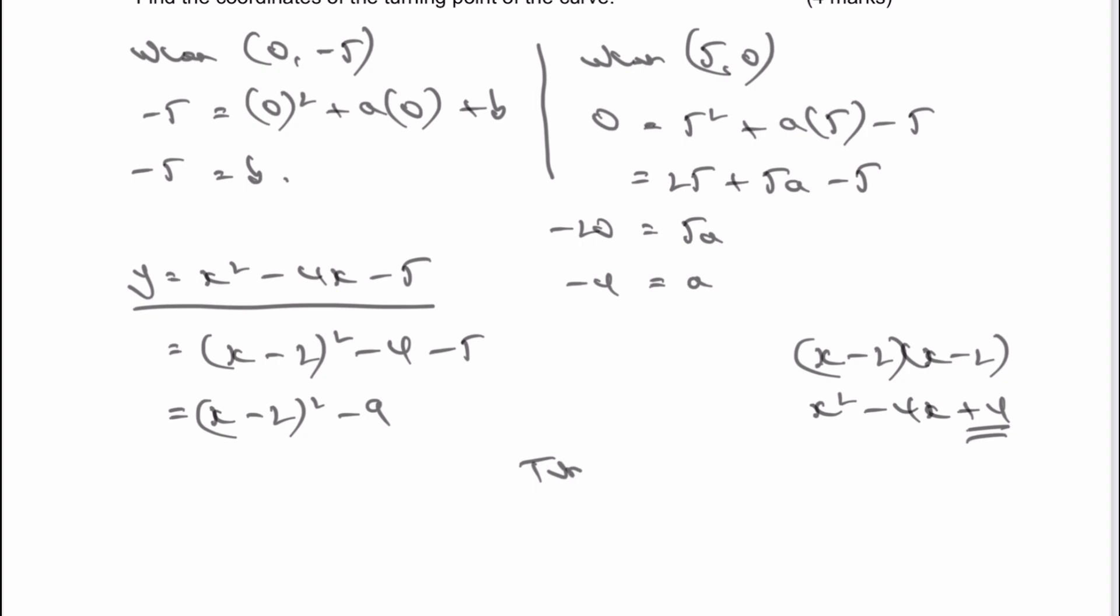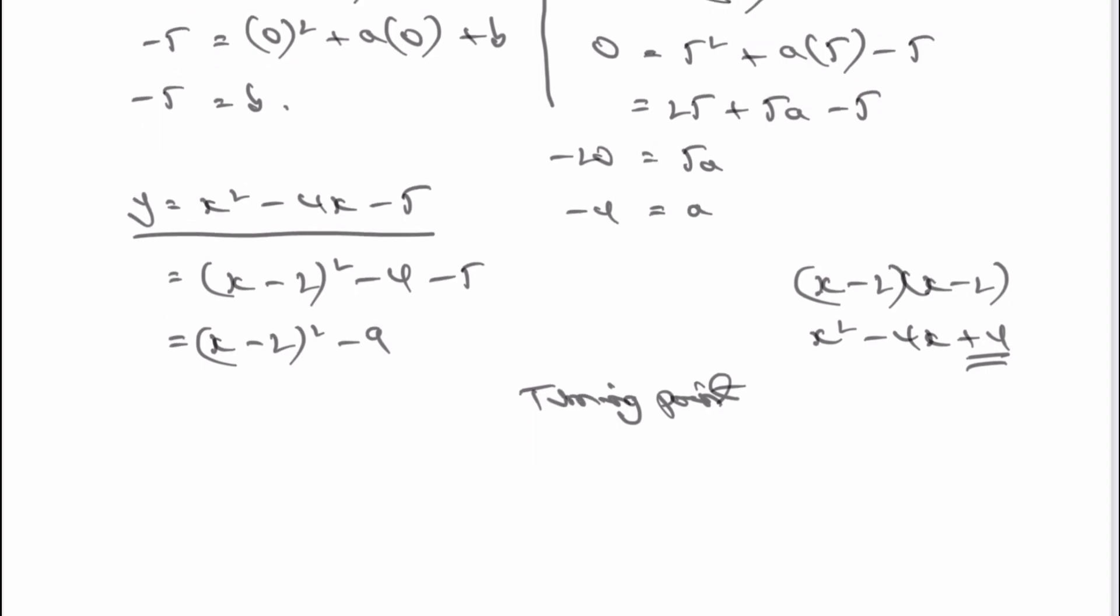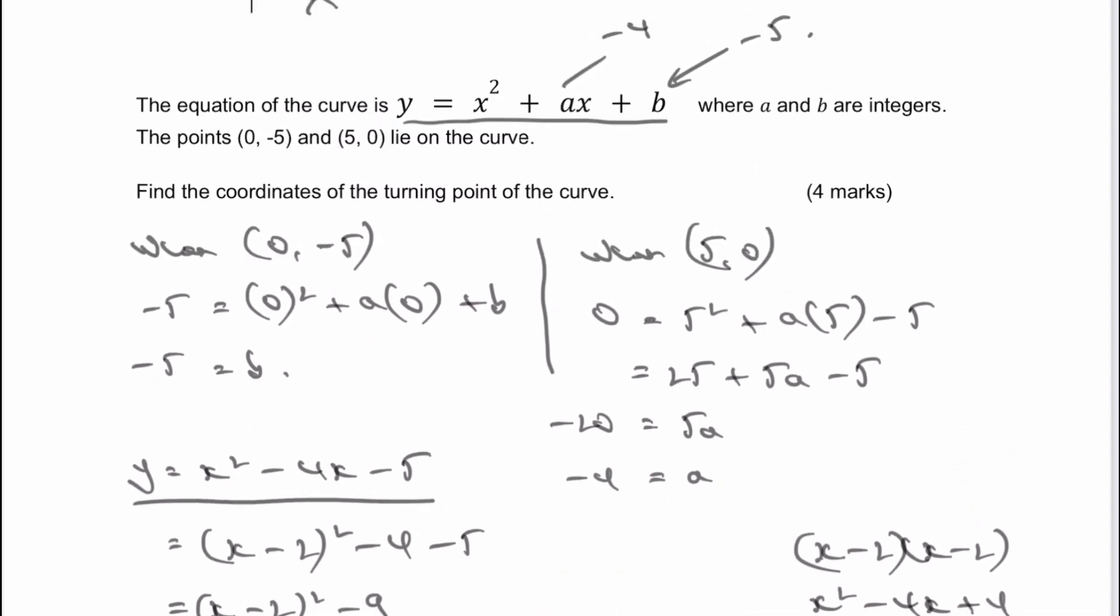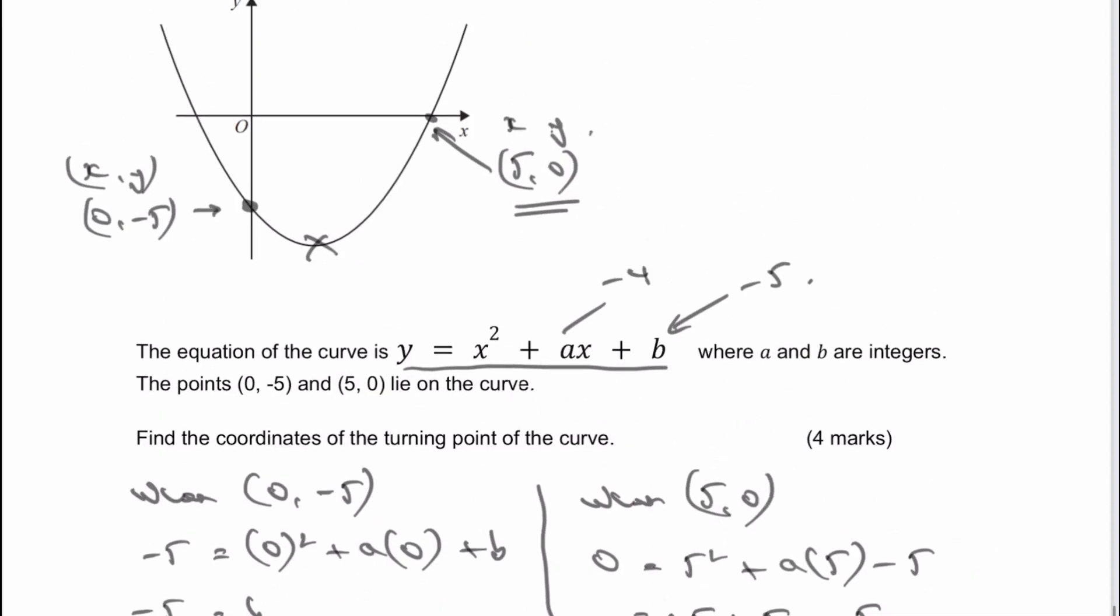So the turning point directly can be read from the completed square form. But you have to remember, this minus becomes a positive. So the turning point is going to be positive 2 and then negative 9. So the value of the turning point on this equation is going to be (2, -9). And that would be the answer to this particular question.